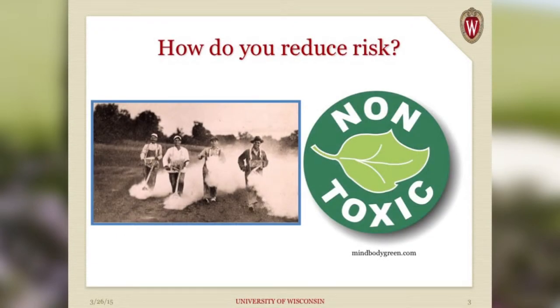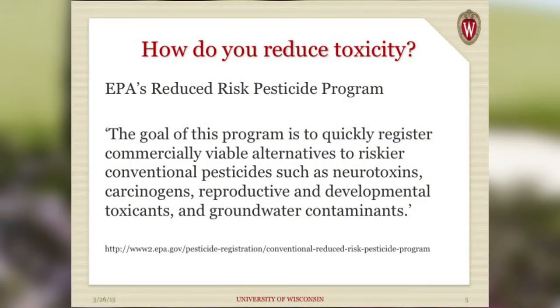How do you go about reducing risk? If you were a superintendent managing turfgrass, how would you propose to reduce risk at your facility? We can reduce the number of times we spray, reducing our exposure. Methods for pesticide application have changed over the years. To reduce toxicity, there are different ways that governmental agencies measure it. One of the easiest ways, widely available to the general public, is through the EPA's Reduced Risk Program.